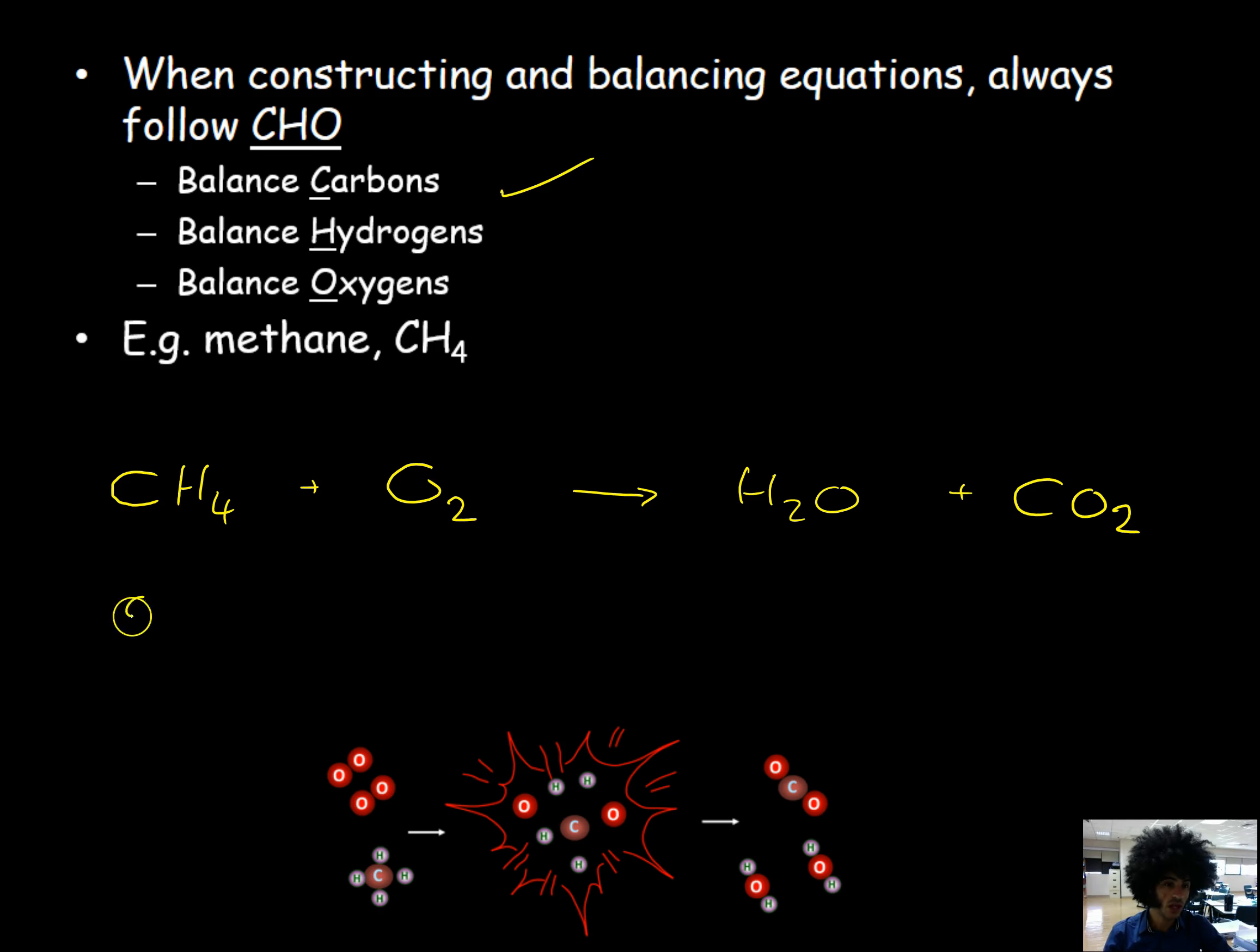I'll start with my carbons. I've got one carbon over here and I've got one carbon over here so that's fine. I don't have to mess around with that. Next one is hydrogens. I've got four hydrogens over here and I've only got two over here. So I need to make that match. I need two more over here so I'm going to add a two there. So that now gives me four. That's now balanced. To finish off I'm going to do my oxygens. I've got two oxygens over here. Over here I've got two and one lot of two, so that's two plus two which equals four oxygens. To balance this out I need more on this side. I'm going to put a two there. Two lots of O2 is four and the whole thing is balanced. So CH4 plus 2O2 gives you 2H2O and CO2.